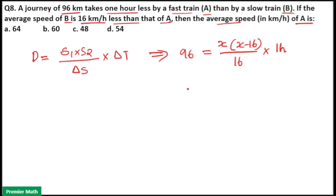That means 96 into 16 is equal to X into X minus 16. Here you can see 96 can be written as 48 into 2. That means 48 into 2 into 16 is 32.